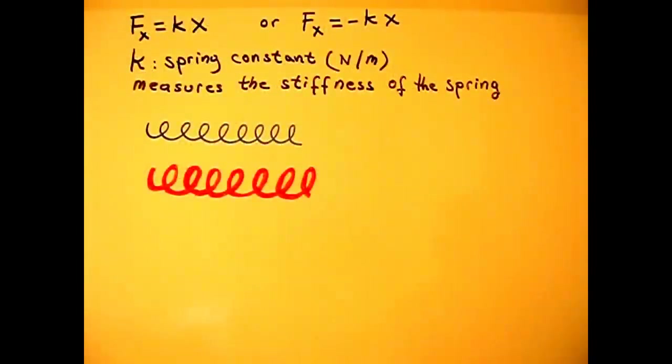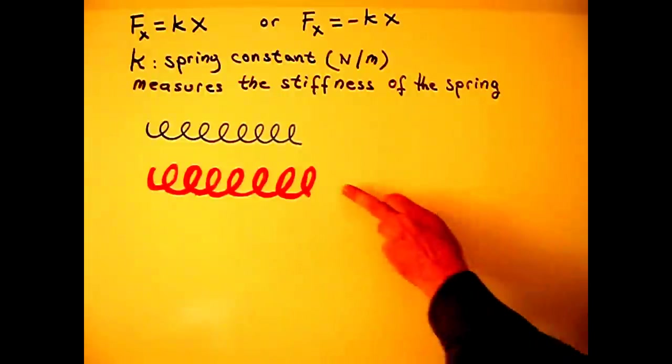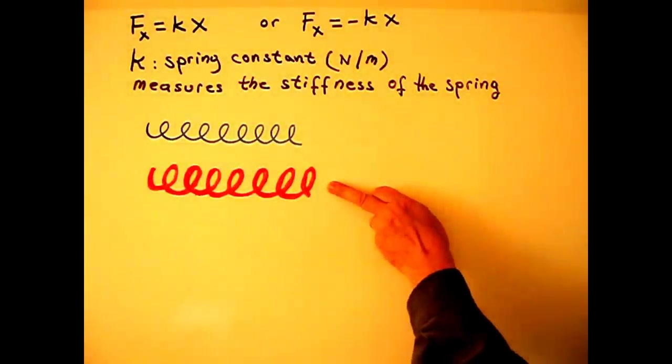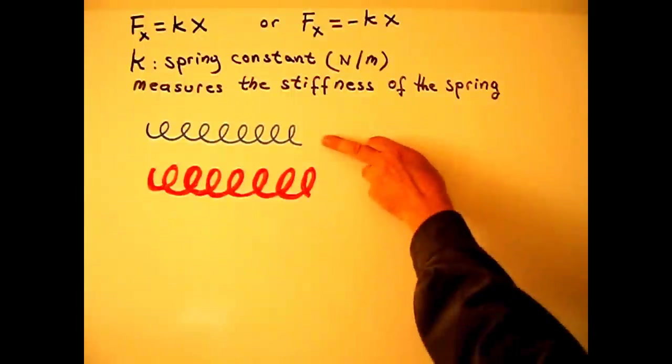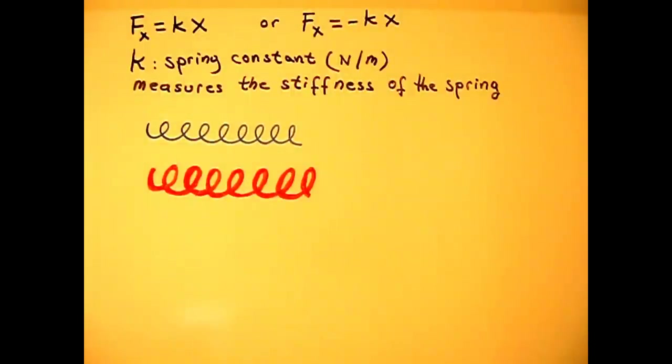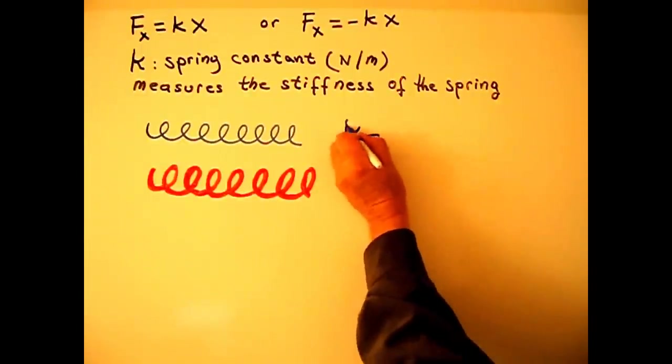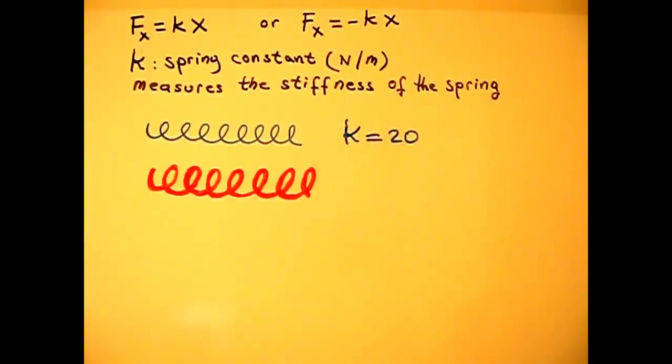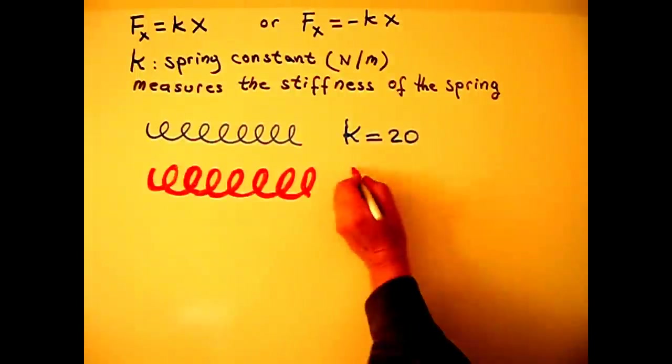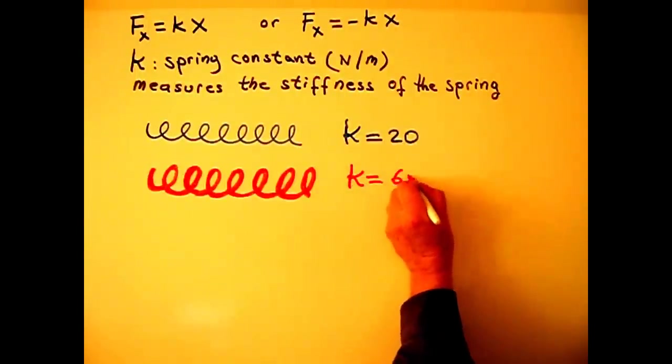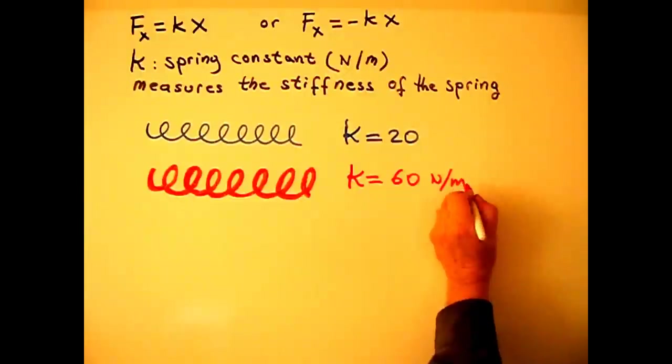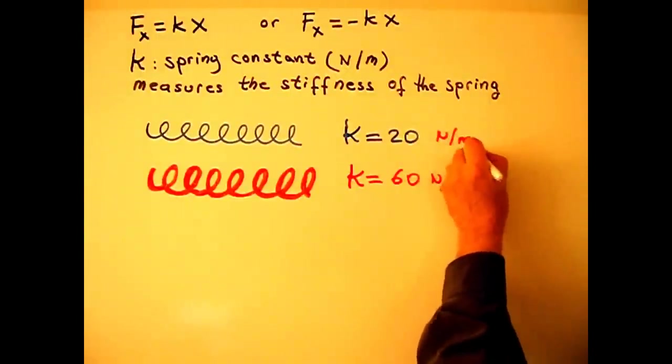What is k? It is spring constant or force constant. Spring constant measures the stiffness of the spring. More stiff spring has larger k value. Let's say this is k equals 20 for this spring. Let's say k equals 60 newtons per meter.